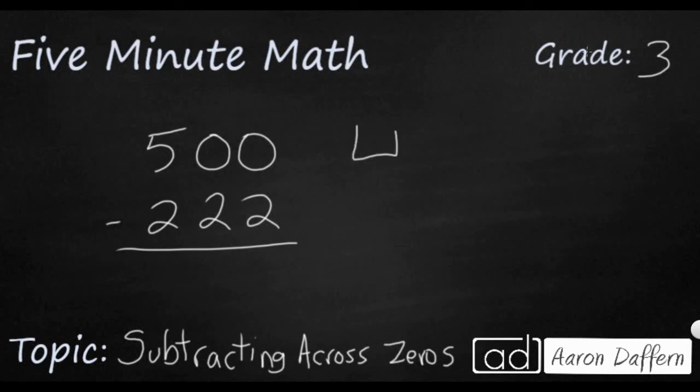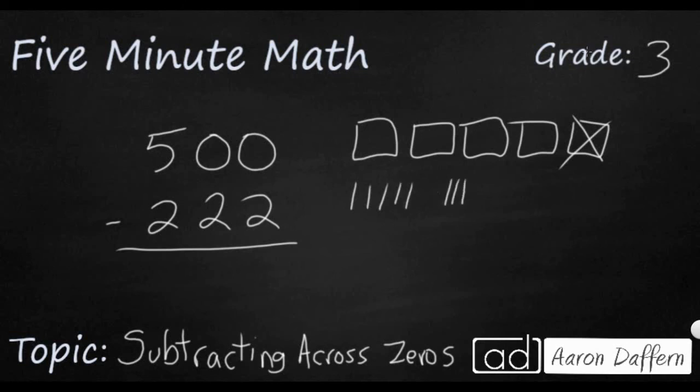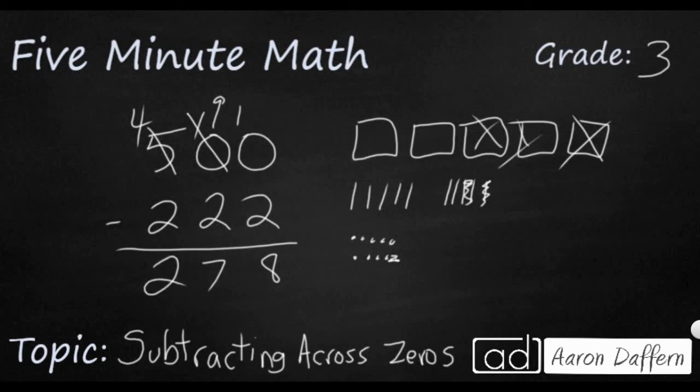As always, to help out, I'm going to draw my five hundreds flats and I need to take away two ones, but I can't do that until I regroup a few times. So I'm going to take one of my hundreds flats and I'm going to break it up into ten tens. Then I'm going to take one of my tens, get rid of that one, and I'm going to make it into ten ones. Once I have that, my regrouping is easy. Ten minus two is eight. Nine minus two is seven. And four minus two is two. So the answer is going to be 278.